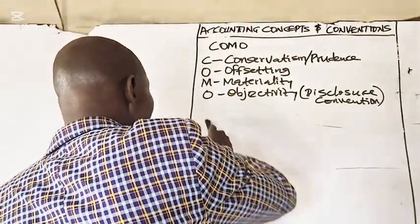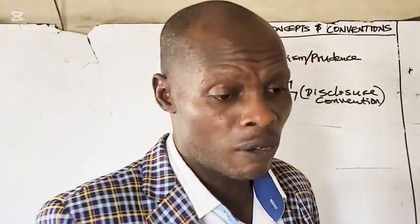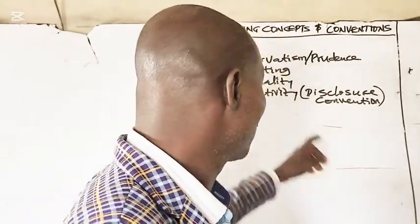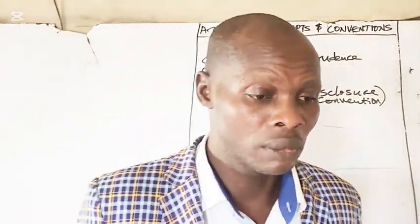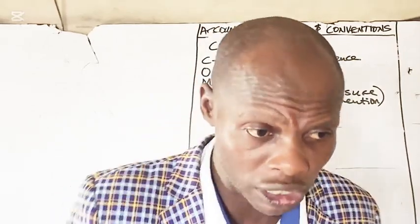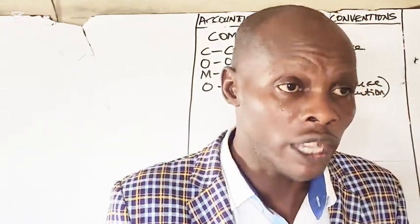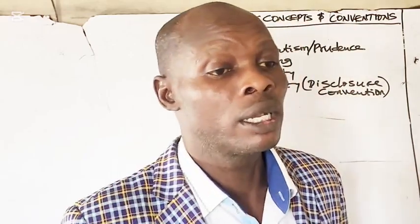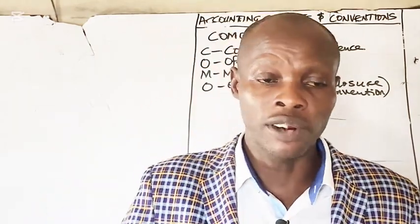The last letter O stands for objectivity — the full disclosure convention. This requires that all relevant and reliable information must be disclosed, including notes to the accounts and accounting policies as part of your financial statements. Remember the mnemonics: GEMMOKAR for accounting concepts and KUMO for conventions. If you remember these two words, you can answer any question on this topic. If this explanation helped you, like the video, comment more simplified topics, and share it with a friend. Thanks for watching.